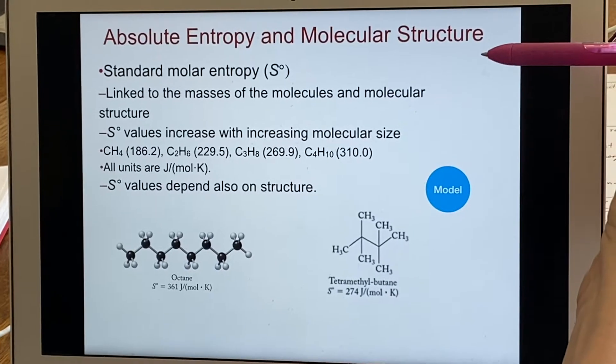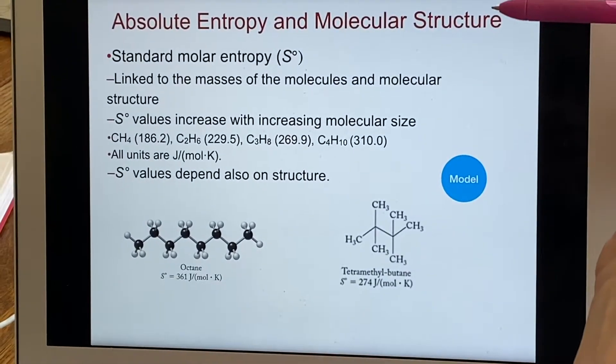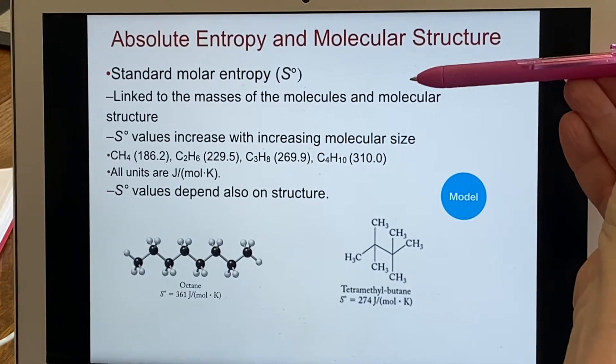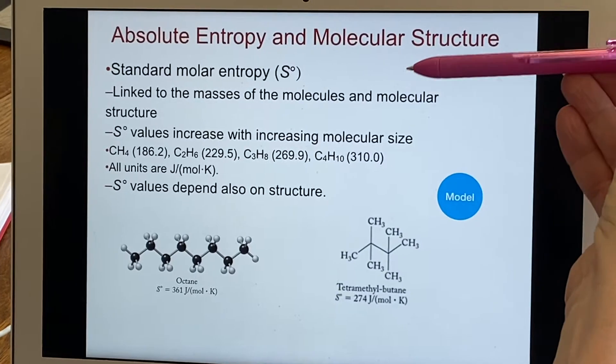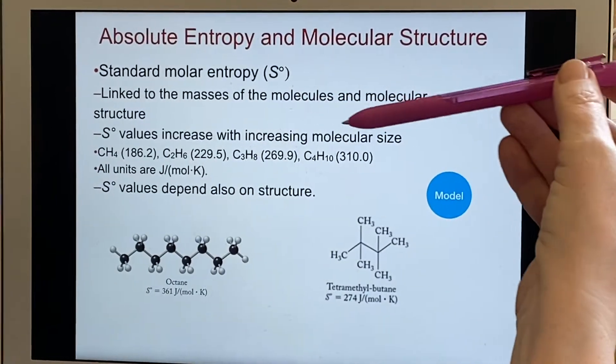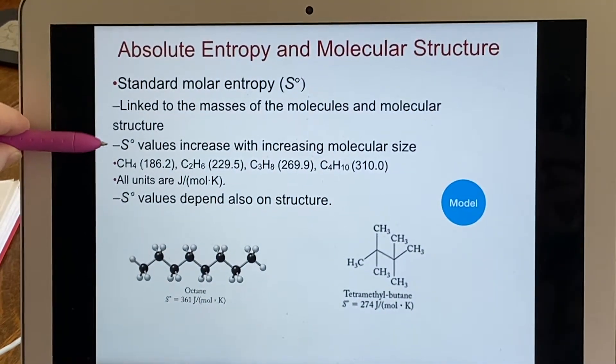If we examine absolute entropy and try to relate it to molecular structure, what we're going to find out is that it is going to be linked to the masses of the molecules and the molecular structure. The bigger the molecule, the more the entropy value will go up.